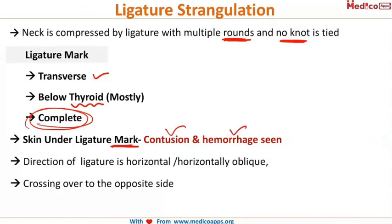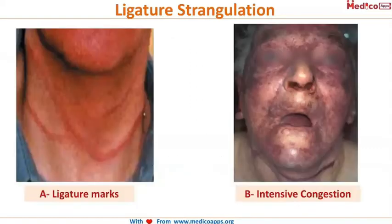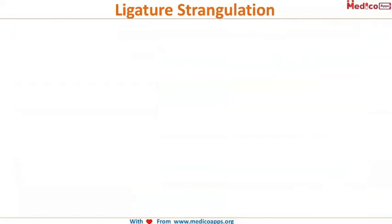The direction of the ligature mark is horizontal or usually horizontally oblique, and it is seen crossing over to the opposite side. You can observe the ligature marks and intensive congestion in ligature strangulation.